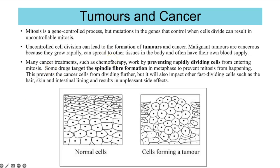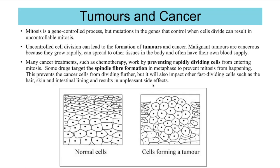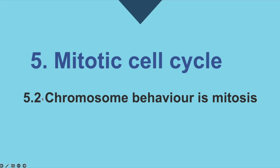With their own blood supply, malignant tumour cells can respire aerobically more rapidly, produce more ATP, and allow mitosis to happen even faster. Many cancer treatments such as chemotherapy work by preventing these rapidly dividing cells from entering mitosis. Some chemotherapy drugs target spindle fibre formation in metaphase, preventing mitosis. The downside is it doesn't just affect cancer cells — it affects all fast-dividing cells such as hair cells, skin cells, and the cells lining the intestine, which is why chemotherapy has so many unpleasant side effects.